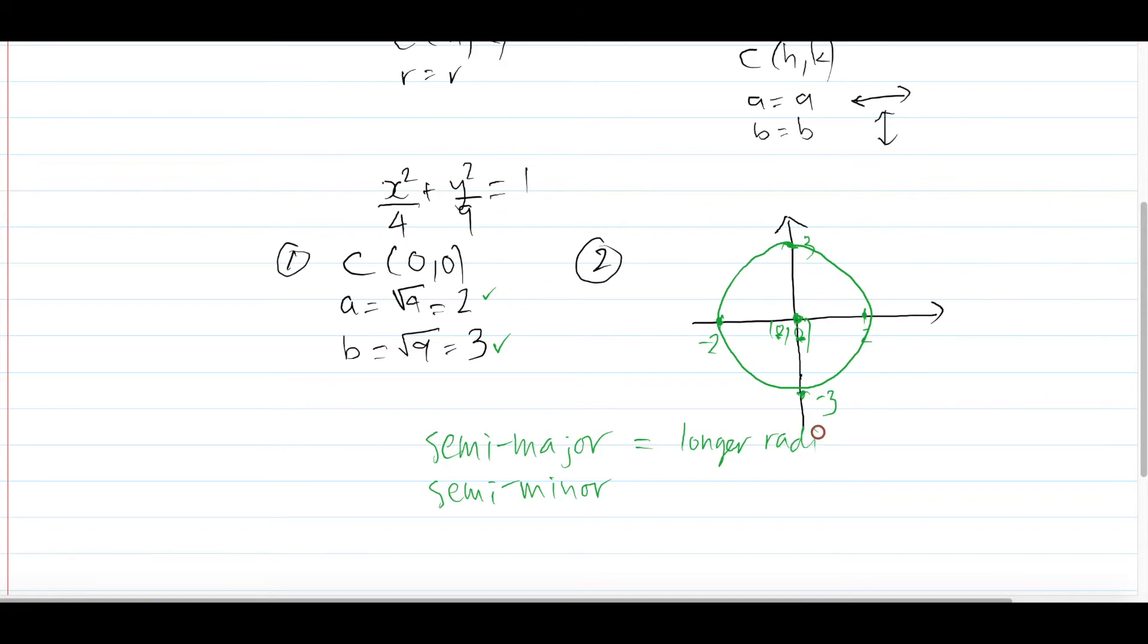In this case, the longer radius would be the b value, so that's 3, because 3 is bigger than 2. And of course, semi-minor is the shorter radius. So in this case, that would be 2.